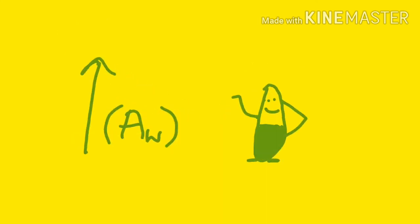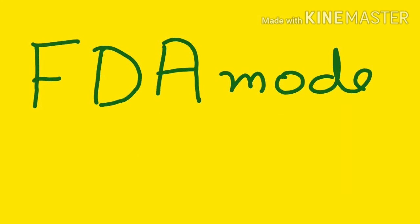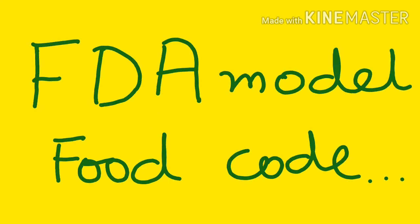FDA model food code. Now just for knowledge, let me tell you that Food and Drug Administration (FDA) for short publishes some codes for food commodities. This is a scientifically, legally, and technically sound way to update food safety rules.